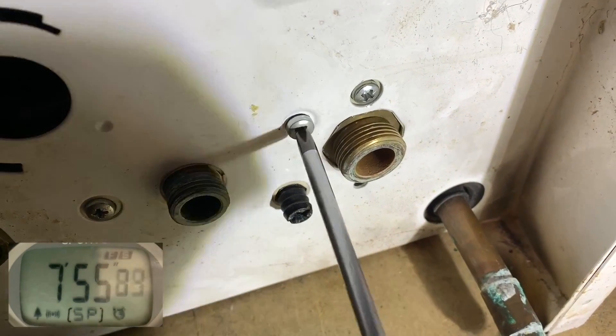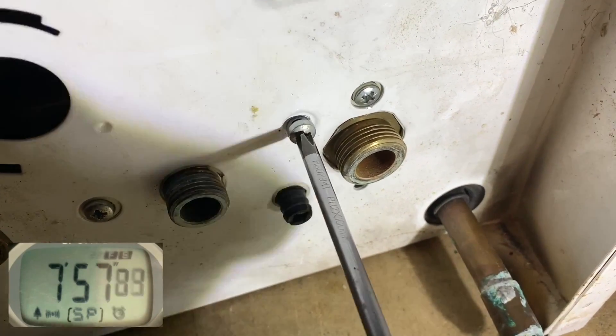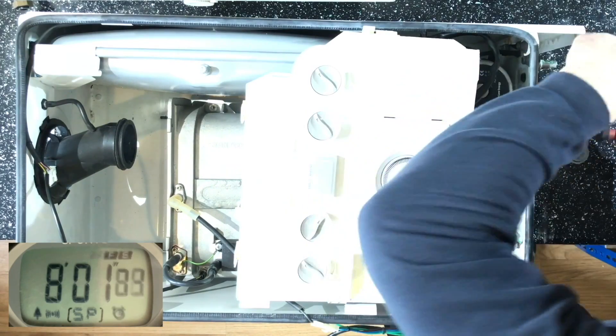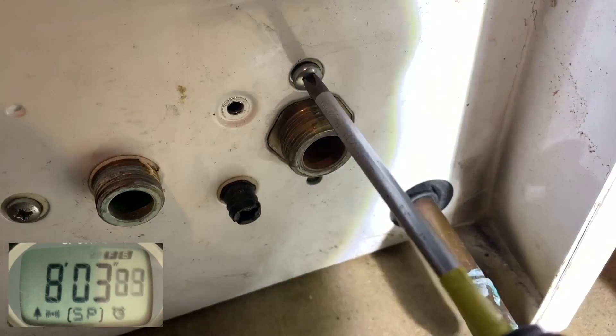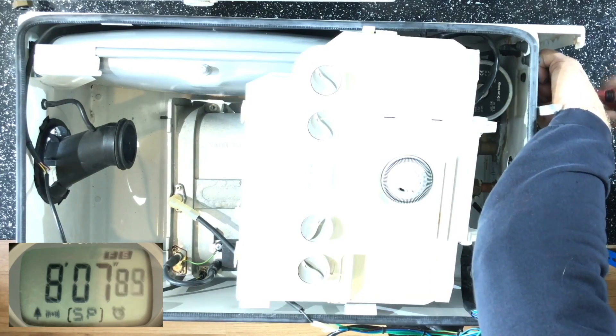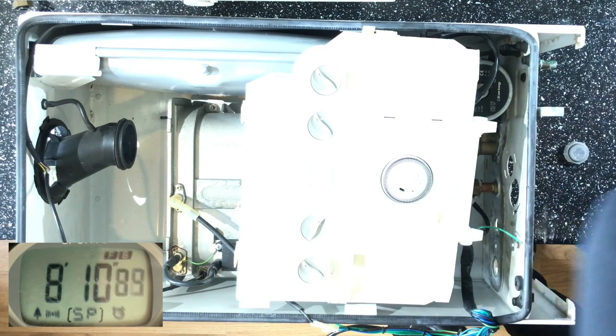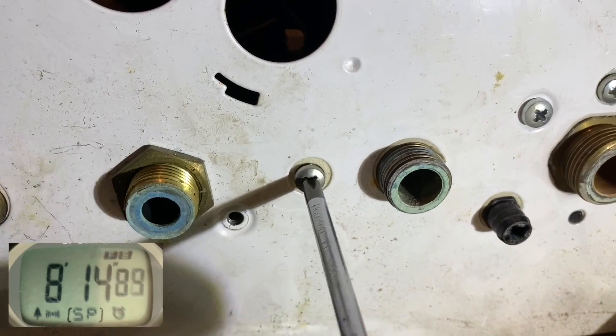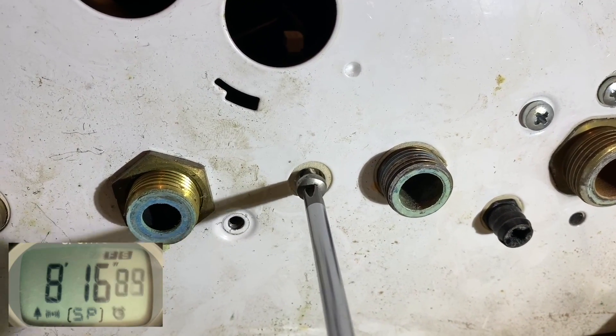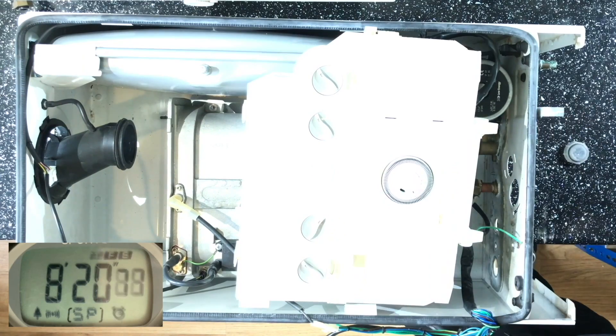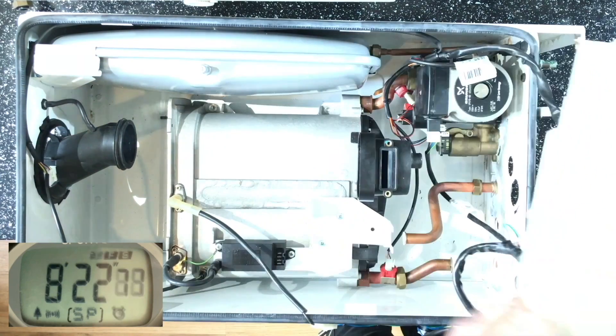So what I'm doing now is I'm just undoing these securing screws to the right-hand side hydro block where the pump is, the flow turbine, and the low-water pressure sensor. I'm going to take this all out as one complete unit, which again is just a matter of undoing three screws and undoing the return pipe which goes to the bottom of the heat exchanger.